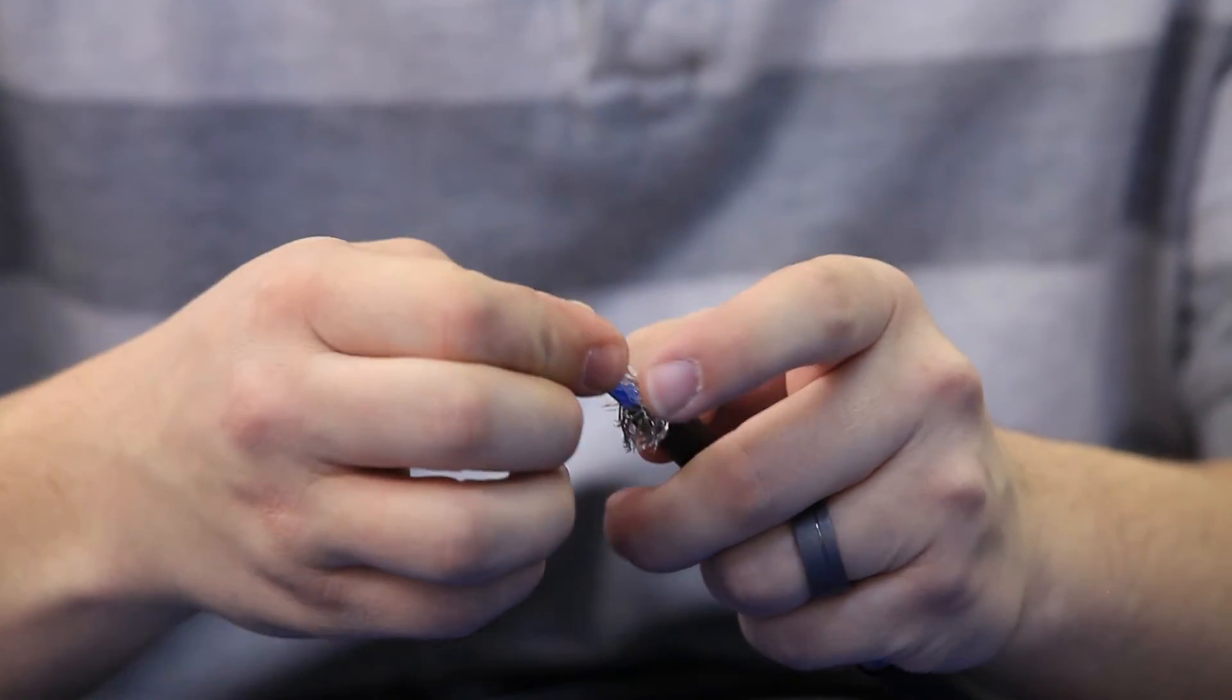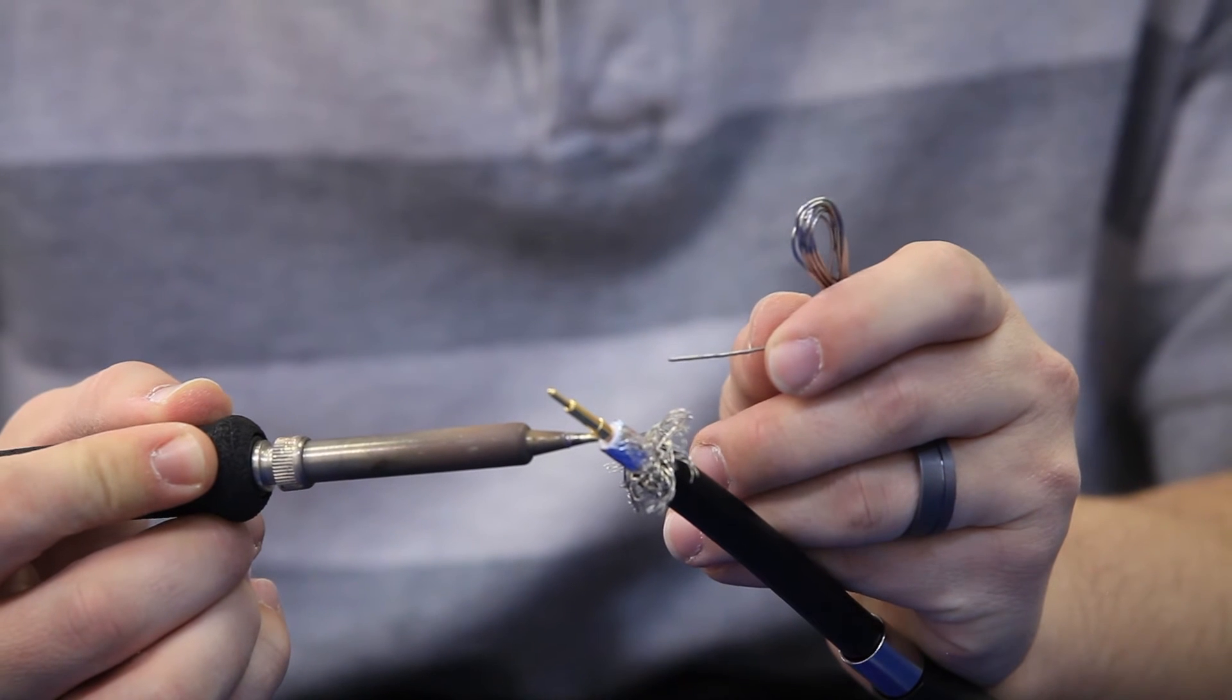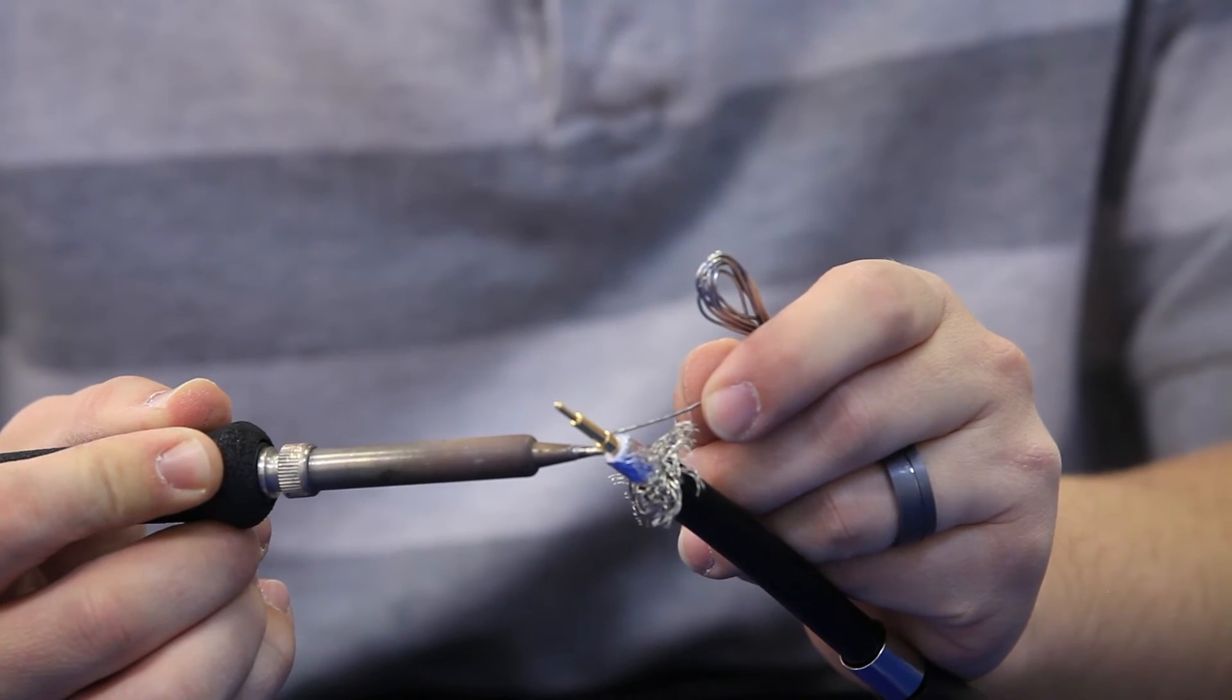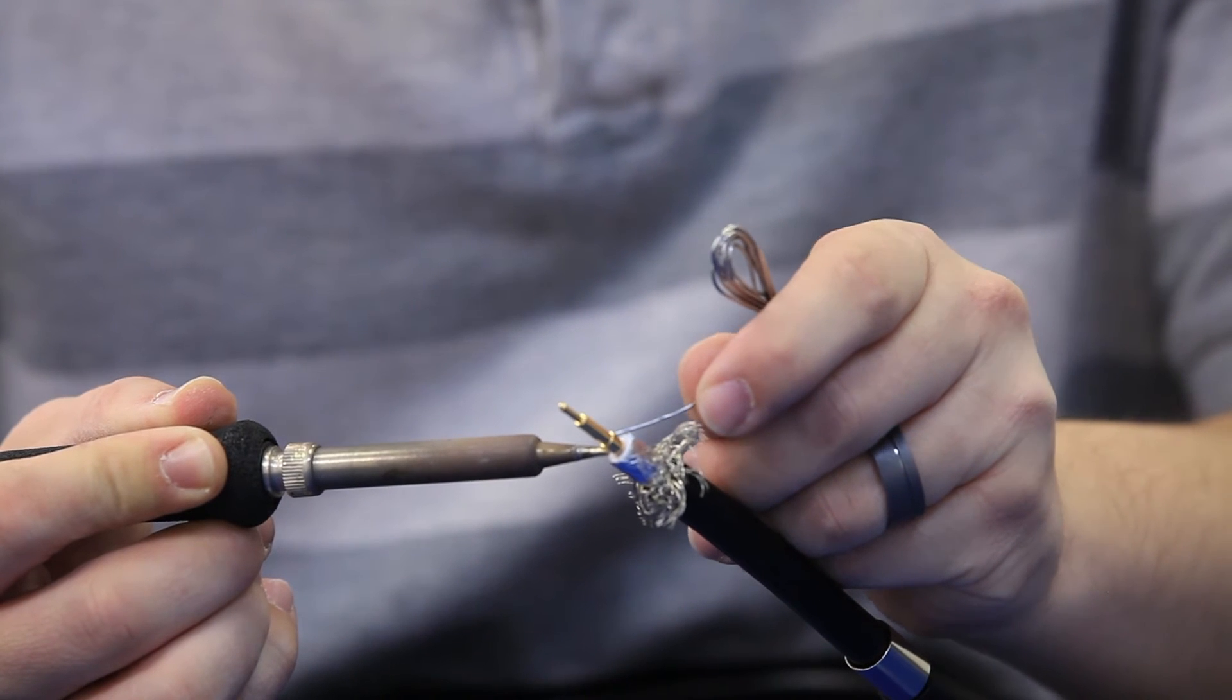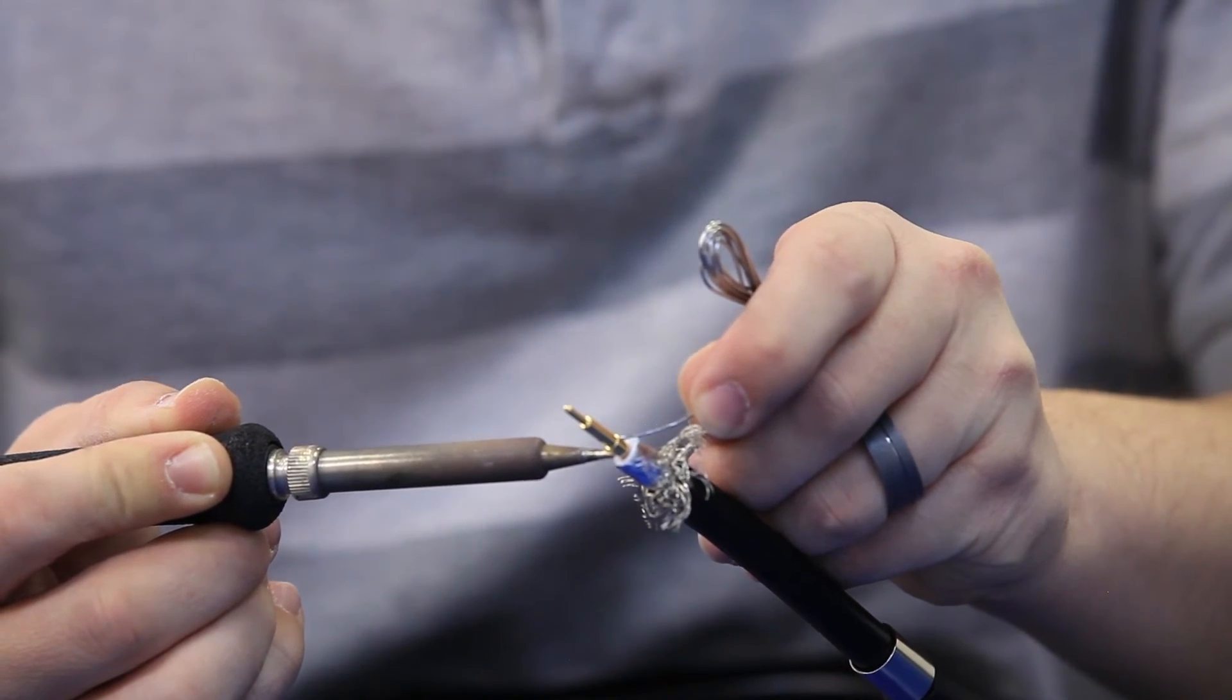Before you begin to solder the center pin, place a small amount of solder on your iron tip. This will help speed up the process. Place your soldering iron on the back of the center pin and heat the metal. Use the small hole in the center pin to fill the gap between the center pin and the center conductor with molten solder.